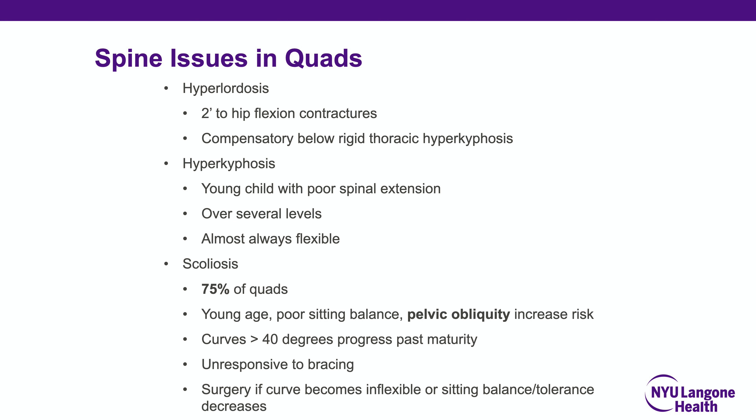Spine issues in quadriplegics include a large hyperlordosis secondary to hip flexion contractures, with compensation below a rigid thoracic hyperkyphosis. A more flexible pattern is seen in young children with poor spinal extension, often occurring over several levels and almost always flexible. Address pelvic obliquity and poor sitting balance, which can be unresponsive to bracing and worsen with growth.